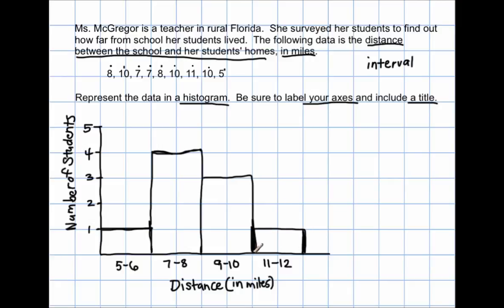And there you have it — that is your histogram. We've labeled the axes with our intervals and what units we were talking about. We also labeled our vertical axis with actual counts of the number of students, so we've labeled both axes with numbers, intervals, and units. Now we have to include a title — a good title would be 'Distance between school and students' homes in miles.'